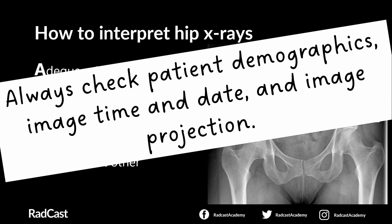Image projection refers to the orientation of the patient in relation to the x-ray source. Hip x-rays are usually in anterior-posterior projection, or AP, meaning the anterior part of the patient — their front — is facing the x-ray source and their posterior or back is facing away. When looking for fractures it's also important to look at a lateral view taken from the side, though this session will focus on AP hip x-rays as these are more common in exams and clinical practice.